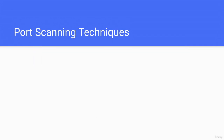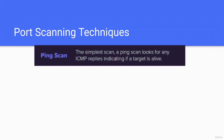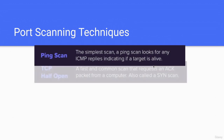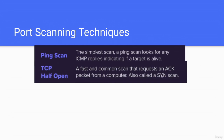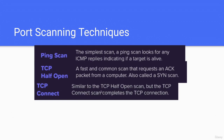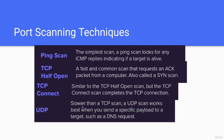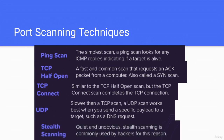Now let's look at port scanning techniques — this is a general overview; we will cover Nmap scanning techniques in depth later. The ping scan is the simplest: it looks for any ICMP replies to indicate if a target is alive. TCP half-open is a fast and common scan that requests a SYN-ACK back, also called a SYN or synchronization scan. TCP connect is similar but completes the full TCP connection. UDP scan is slower and works best when you send a specific payload to the target such as a DNS request. Stealth scanning is quiet and unobvious, commonly used by hackers.